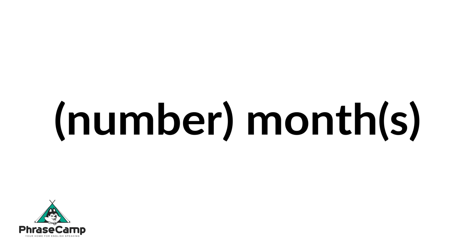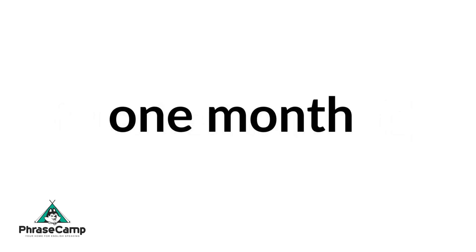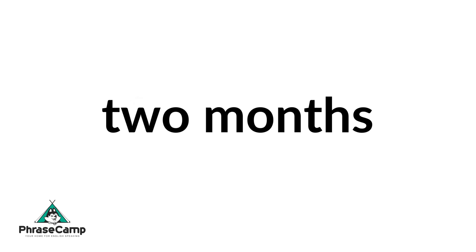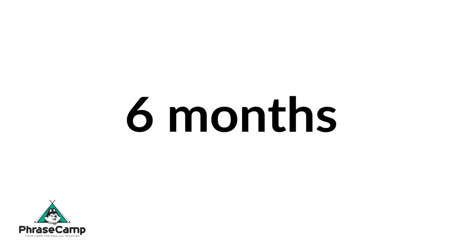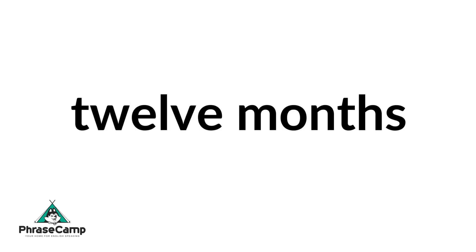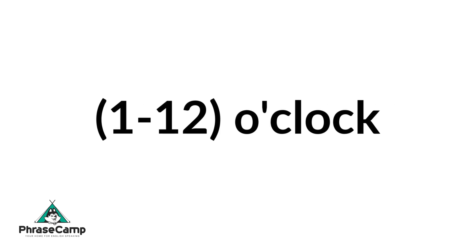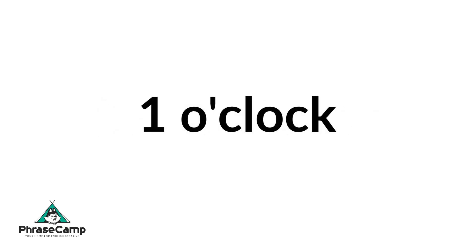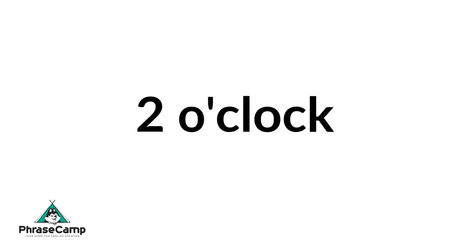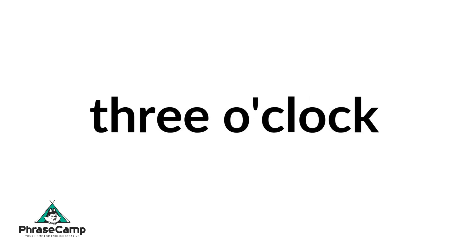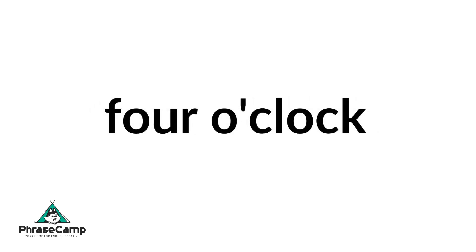Next, add a number and add months. So one month, two months, three months, six months, 12 months, etc. Next, add one to twelve and then add o'clock. So one o'clock, two o'clock, three o'clock, four o'clock, and so on.